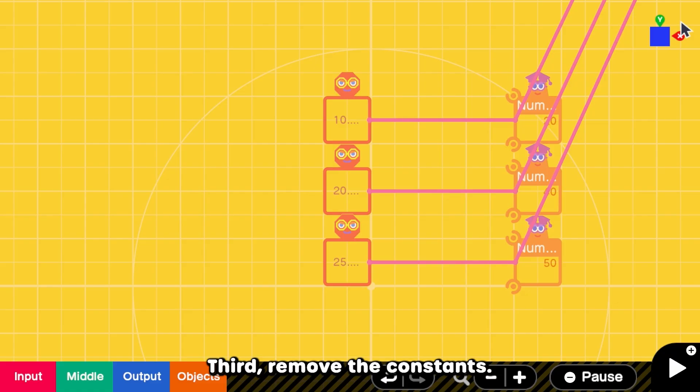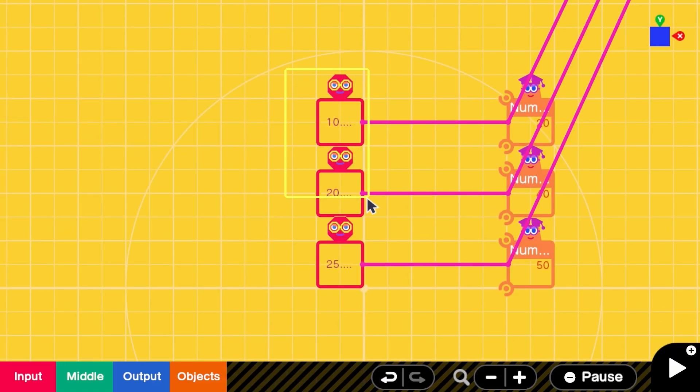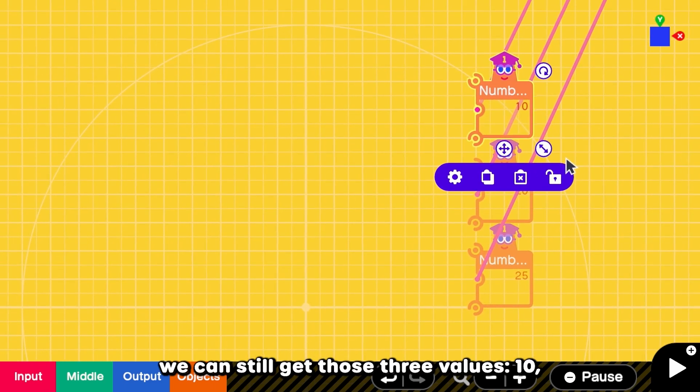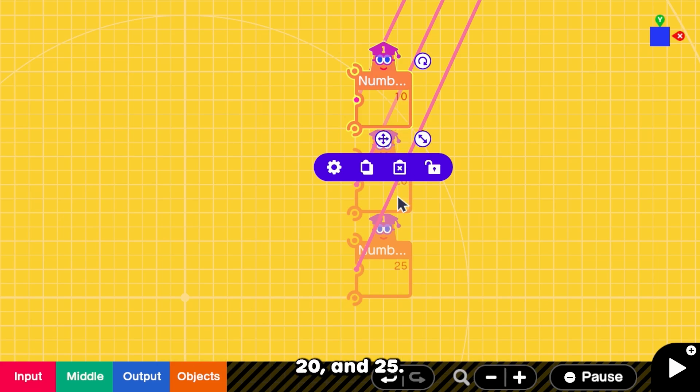Third, we move the constants. And yay! We can still get those three values 10, 20, and 25.